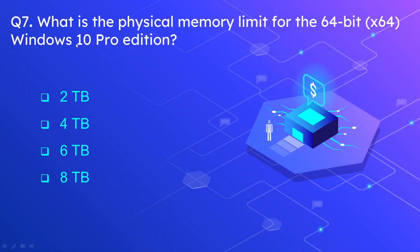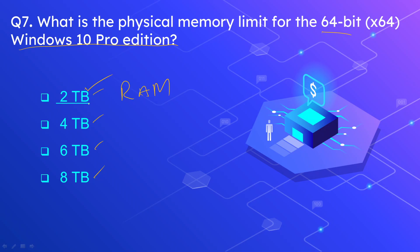Question number seven: what is the physical memory limit for the 64-bit Windows 10 Pro Edition? The options are 2 TB, 4 TB, 6 TB, and 8 TB. The correct answer is 2 TB. So in the 64-bit Windows 10 Pro Edition, we have a RAM limit of up to 2 TB.